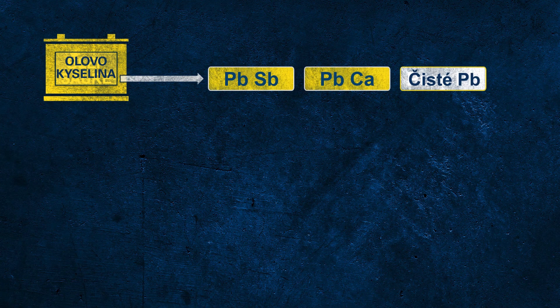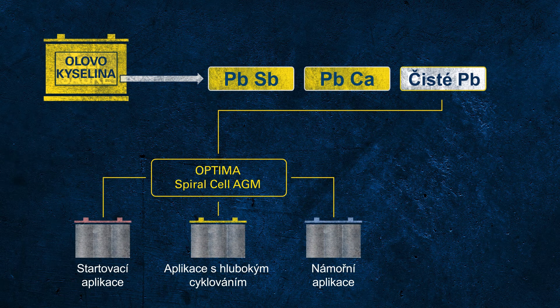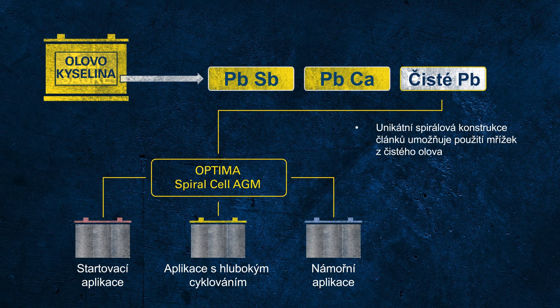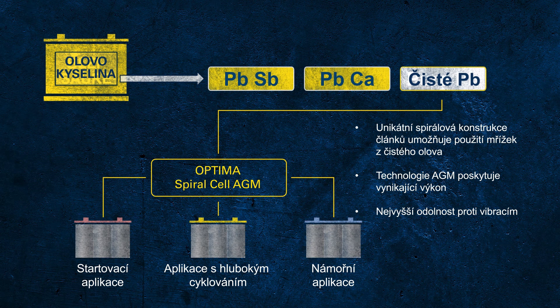There's one technology still missing: batteries with grids made out of pure lead. Since pure lead is a very soft material, it demands a special construction to ensure mechanical stability. Optima batteries, also a battery brand from Clarius, use a special spiral cell design to achieve outstanding mechanical robustness with pure lead grids. All Optima batteries are AGM batteries — the red top is primarily designed for starter applications, the yellow top for dual-purpose use meaning deep cycle and starter application, and the blue top provides additional features for marine application and is available as a starter or dual-purpose design.